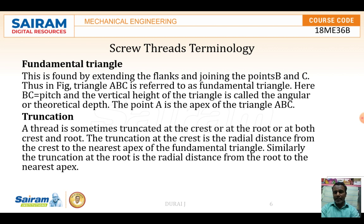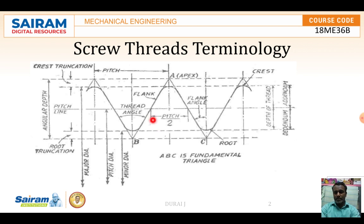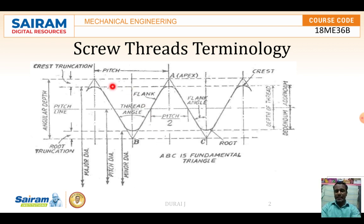Then comes truncation. The thread is sometimes truncated at the crest, or at the root, or both. The truncation of the crest is the radial distance from the crest to the nearest apex of the fundamental triangle. So, from the apex of the fundamental triangle to the nearest crest, that distance is called the crest truncation.